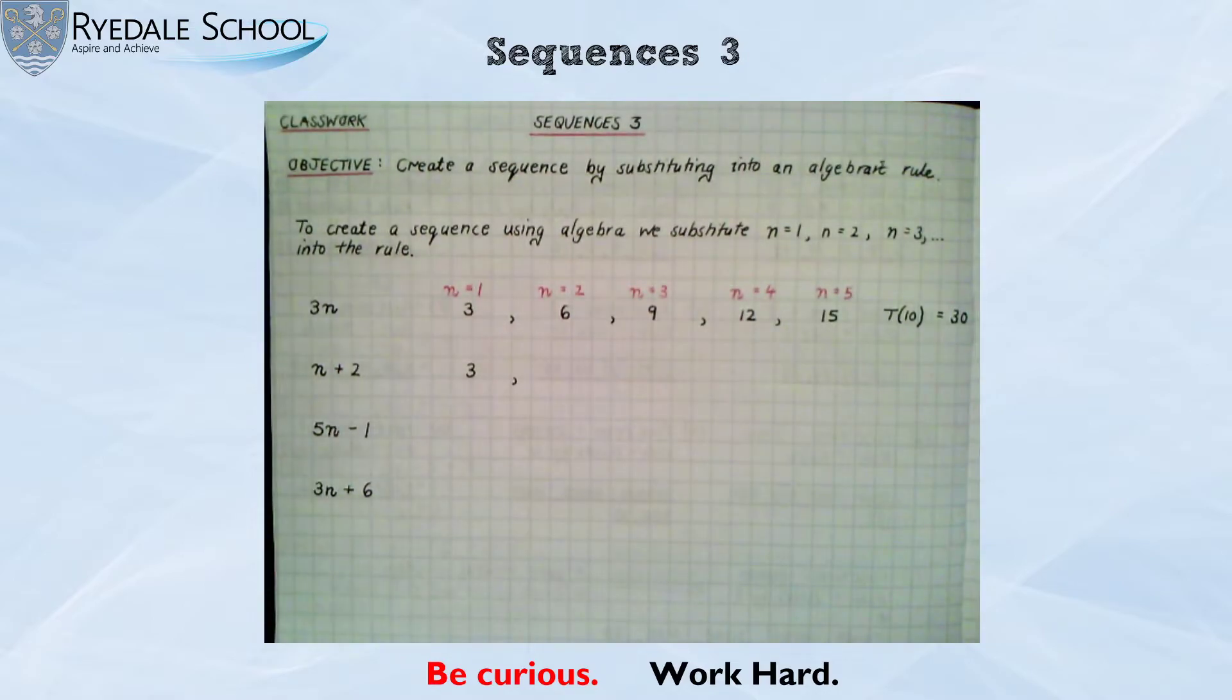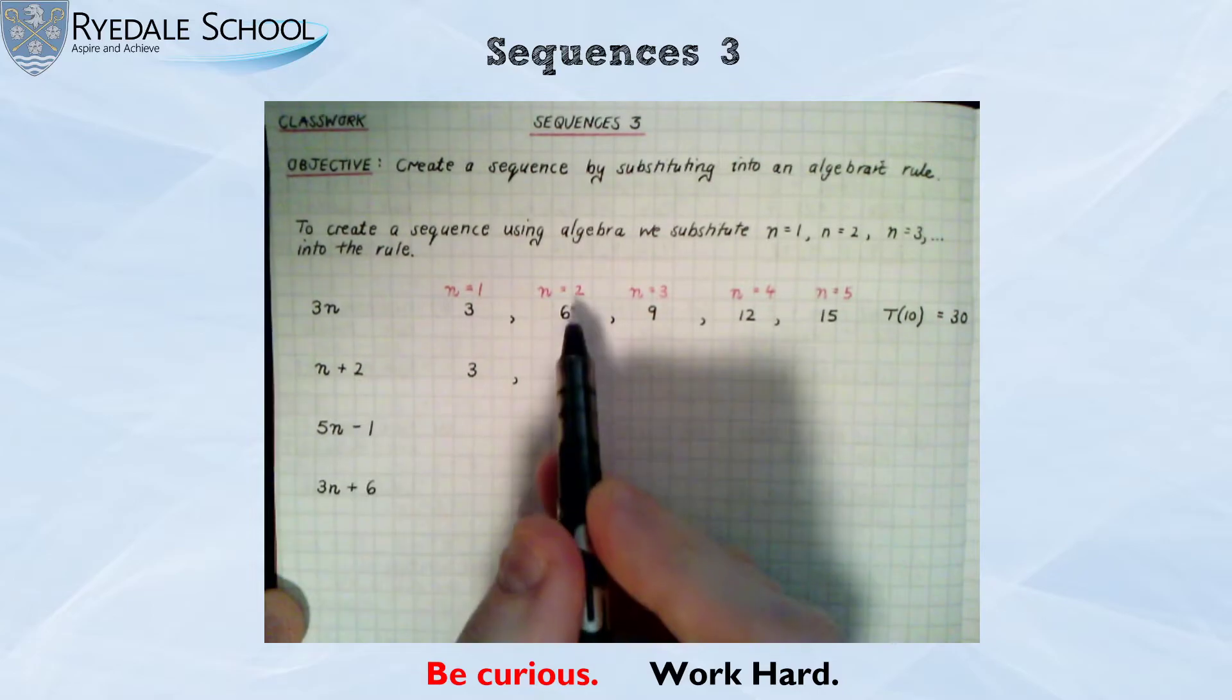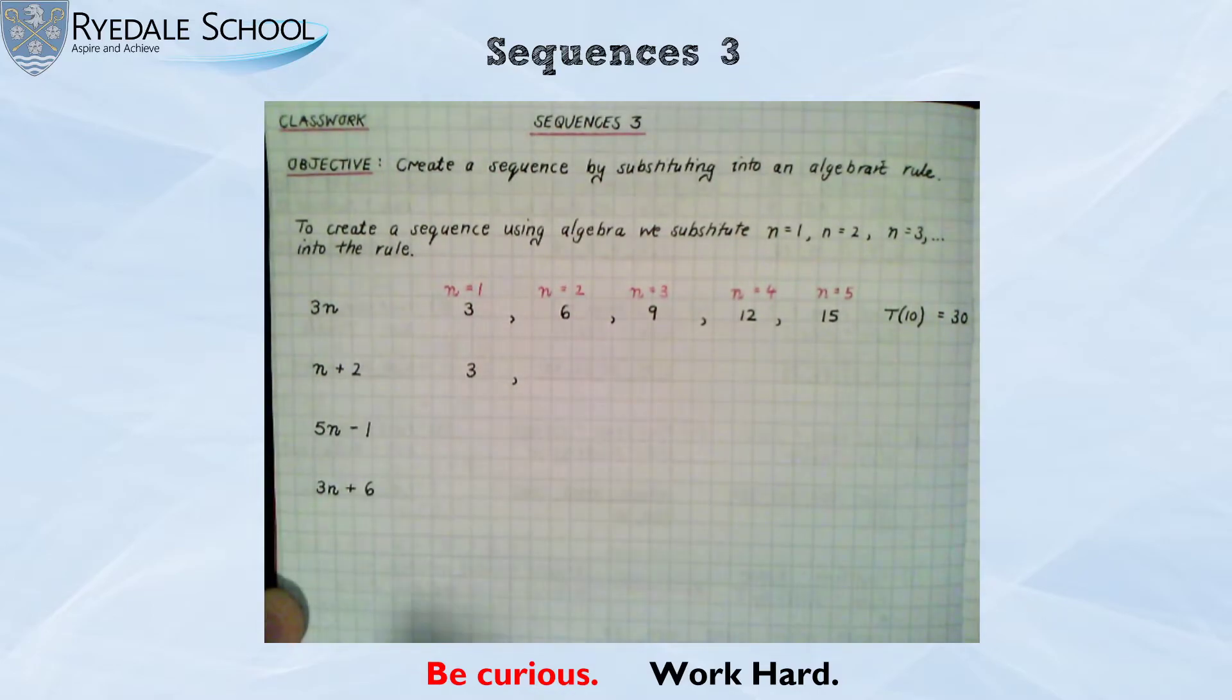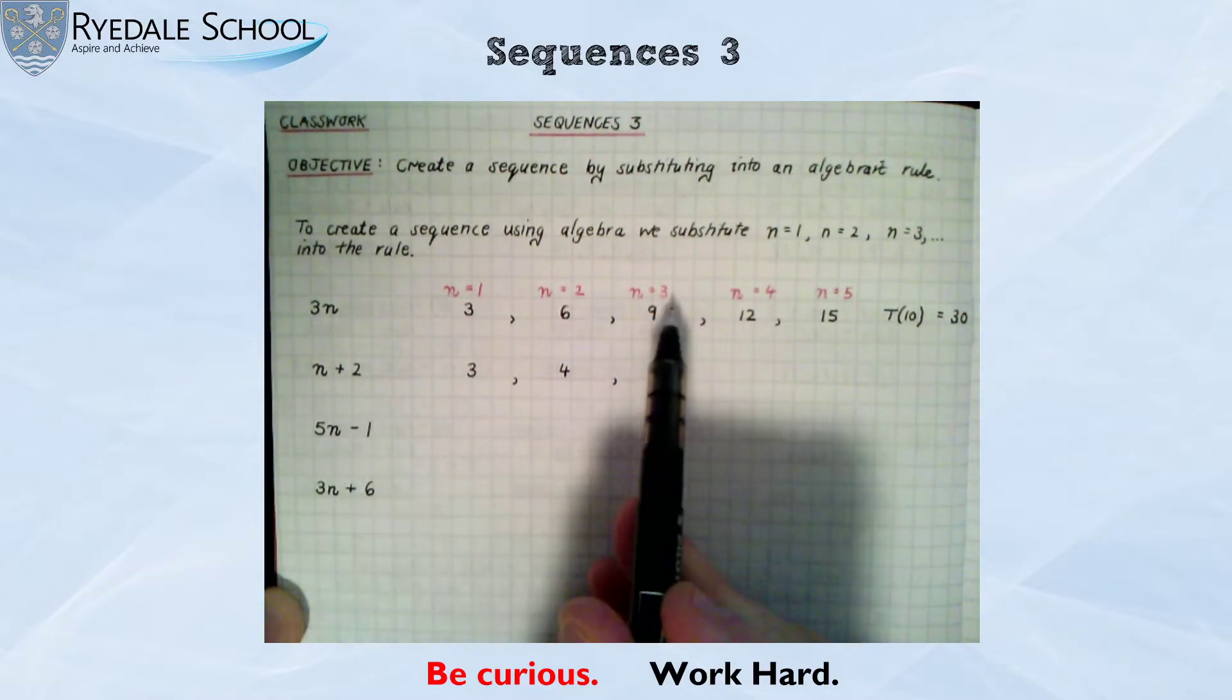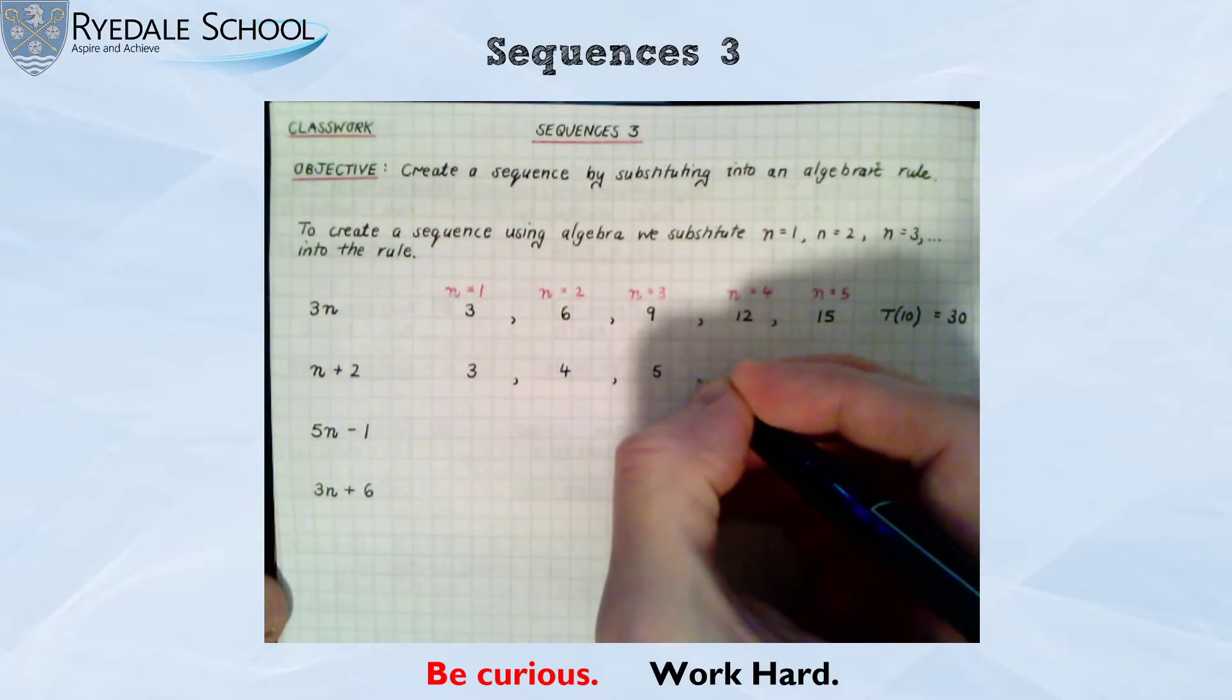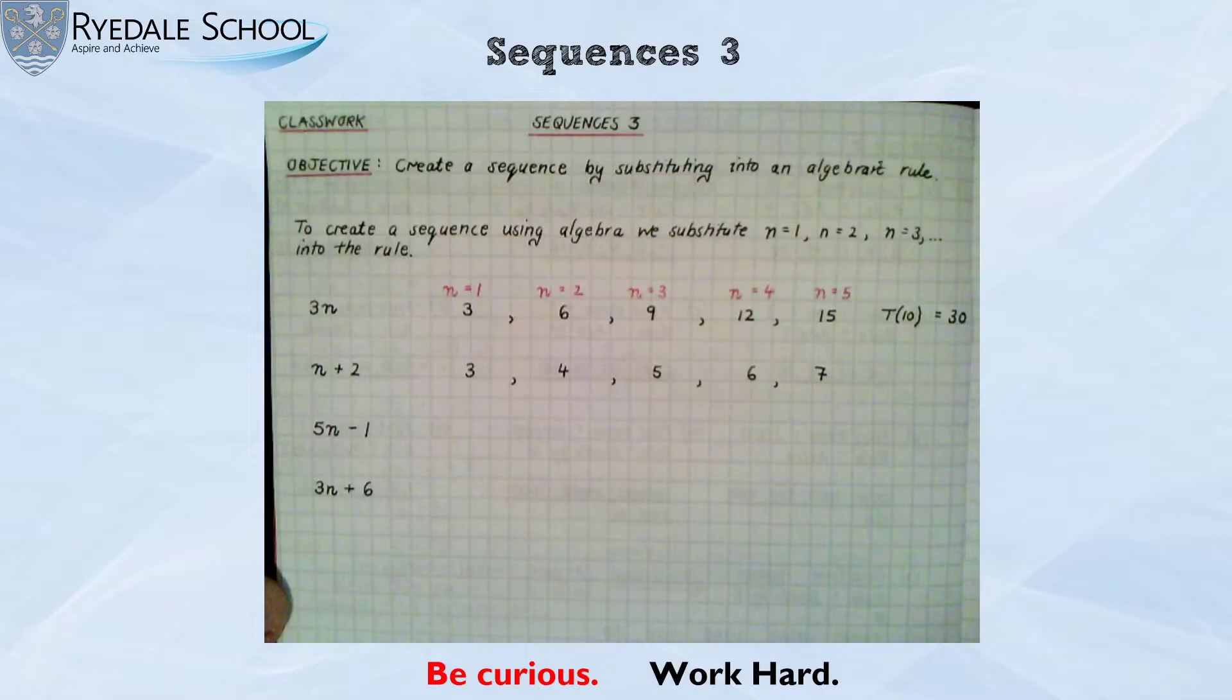Now some of you might be thinking, oh is this one the 3 times table as well? It starts on 3. Well let's see. The next term is when n is 2. I've got to do 2 add 2. So this next one is 2 add 2 which is 4. It's not the same sequence. Third term when n is 3, 3 add 2, that's 5. And I'm sure you can see that this sequence is going up in 1s.